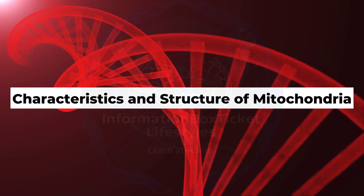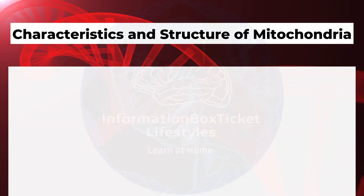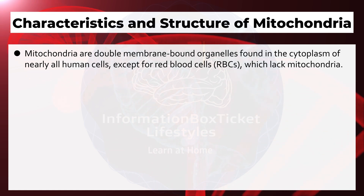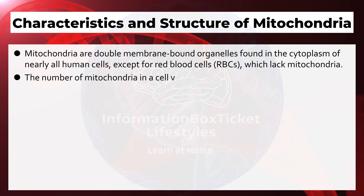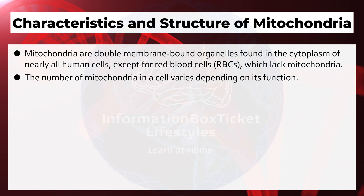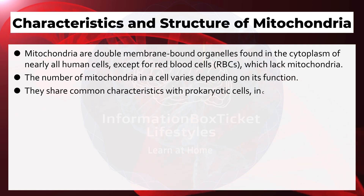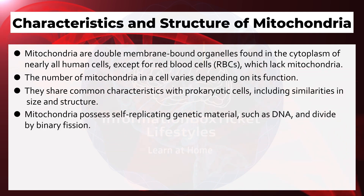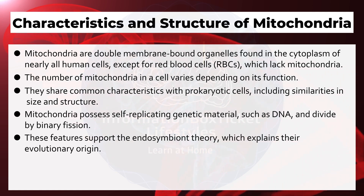Mitochondria are double membrane-bound organelles found in the cytoplasm of nearly all human cells, except for red blood cells, which lack mitochondria. The number of mitochondria in a cell varies depending on its function. They share common characteristics with prokaryotic cells, including similarities in size and structure. Mitochondria possess self-replicating genetic material such as DNA, and divide by binary fission. These features support the endosymbiont theory, which explains their evolutionary origin.